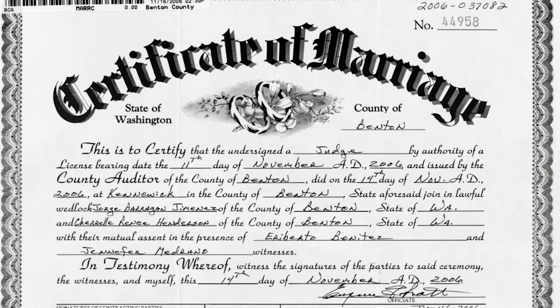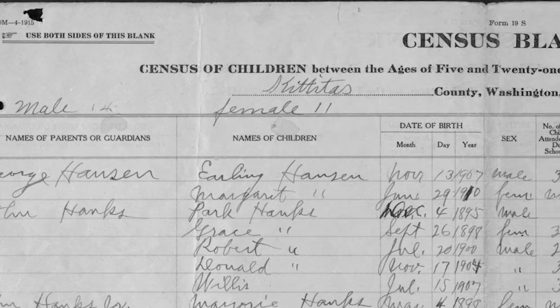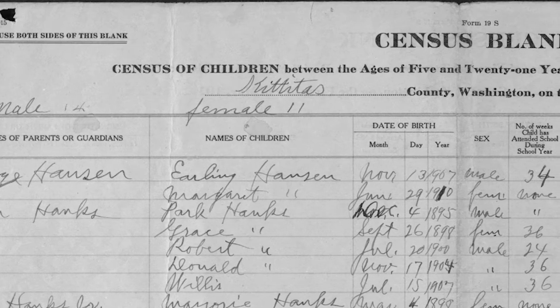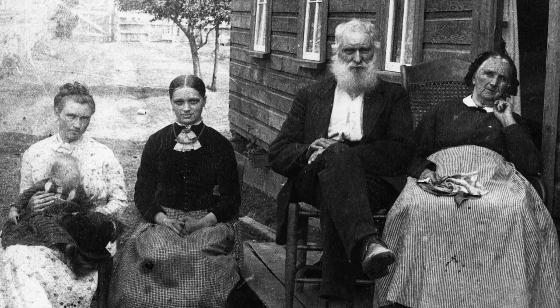Government archives tend to collect records that are created for and by government, so there is definitely a lot of confusion sometimes about what type of records a government archive would even have to help with family research, and a lot of times you have to think a little bit outside the box. Many of you already know that there's birth, death, marriage, and divorce records. Some of you know that there's naturalization that can be found here. Many of you go into probate or court case records, but I'm hoping to cover some of those as well as some of the non-traditional records that we may hold.